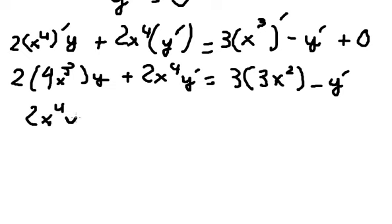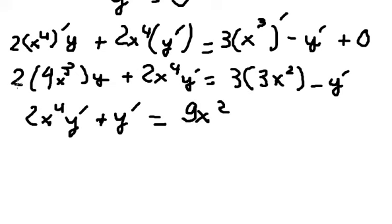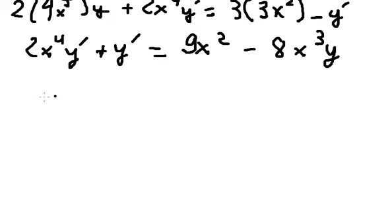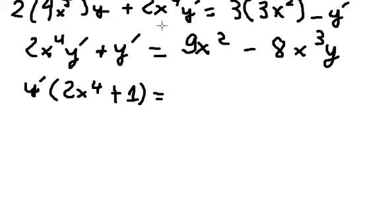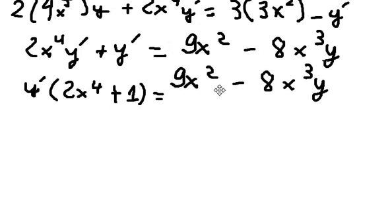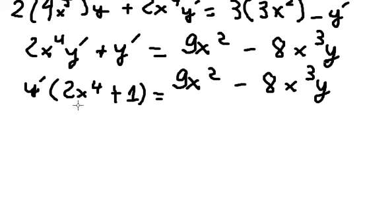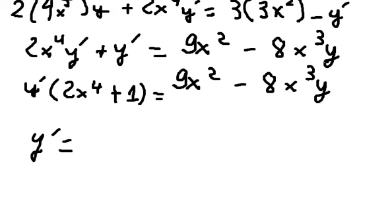We put this one on the left and this one on the right. Three with three gives about nine, two with four gives about eight, and we have negative two, so we do factorization of the first derivative. We divide both sides by 2s to the power of 4 plus one.